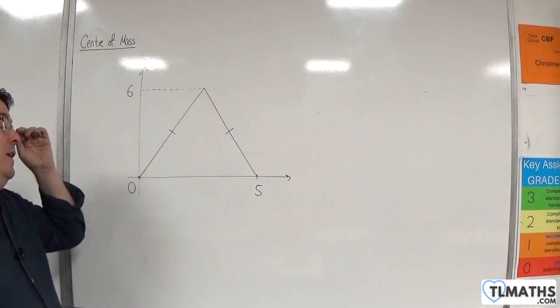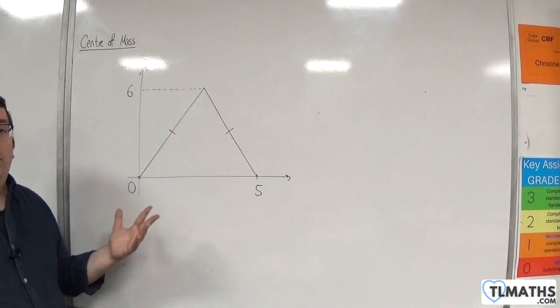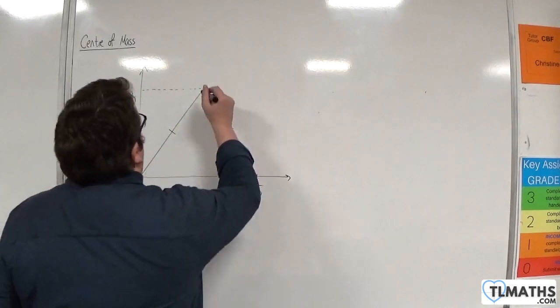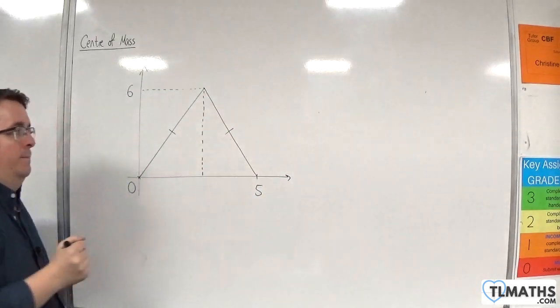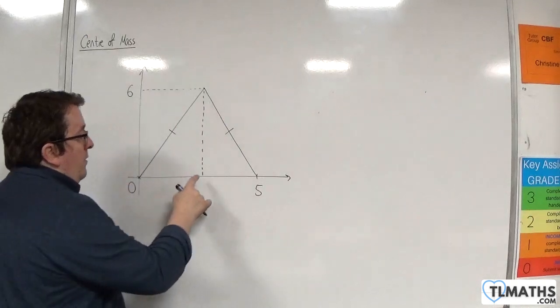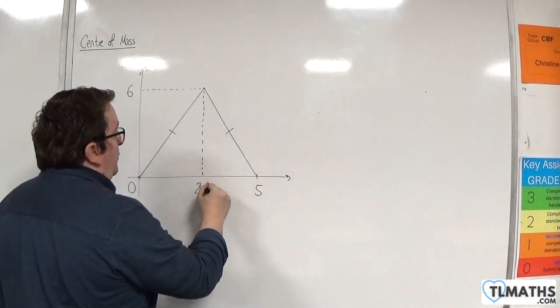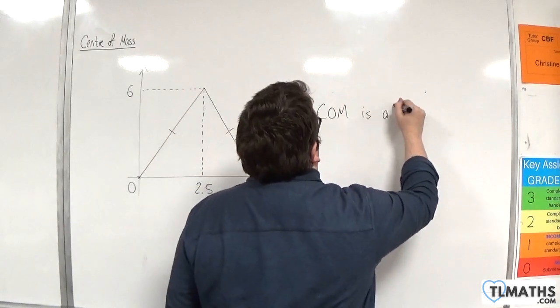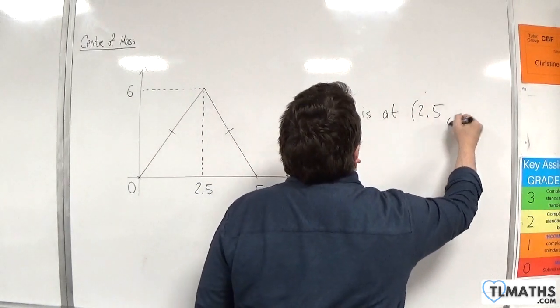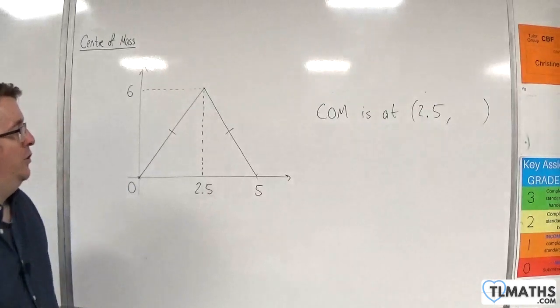However, don't forget that because the shape is symmetric, that means that the centre of mass must lie on this line. And that is going to be 2.5, so we know that the x-coordinate of the centre of mass is going to have x-coordinate 2.5. It's got to be on that line.